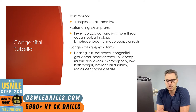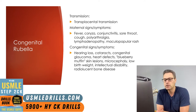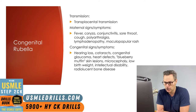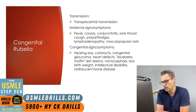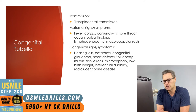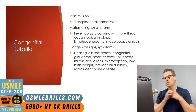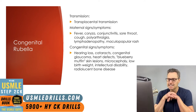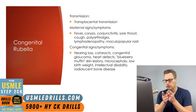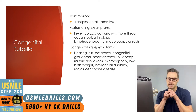The rash of rubella is an erythematous maculopapular rash which may or may not be pruritic. The lymphadenopathy of rubella is generalized and tender — classically postauricular, but suboccipital and cervical nodes can also be involved. The polyarthralgias usually involve the hands, wrists, knees, and ankles symmetrically and can include morning stiffness.